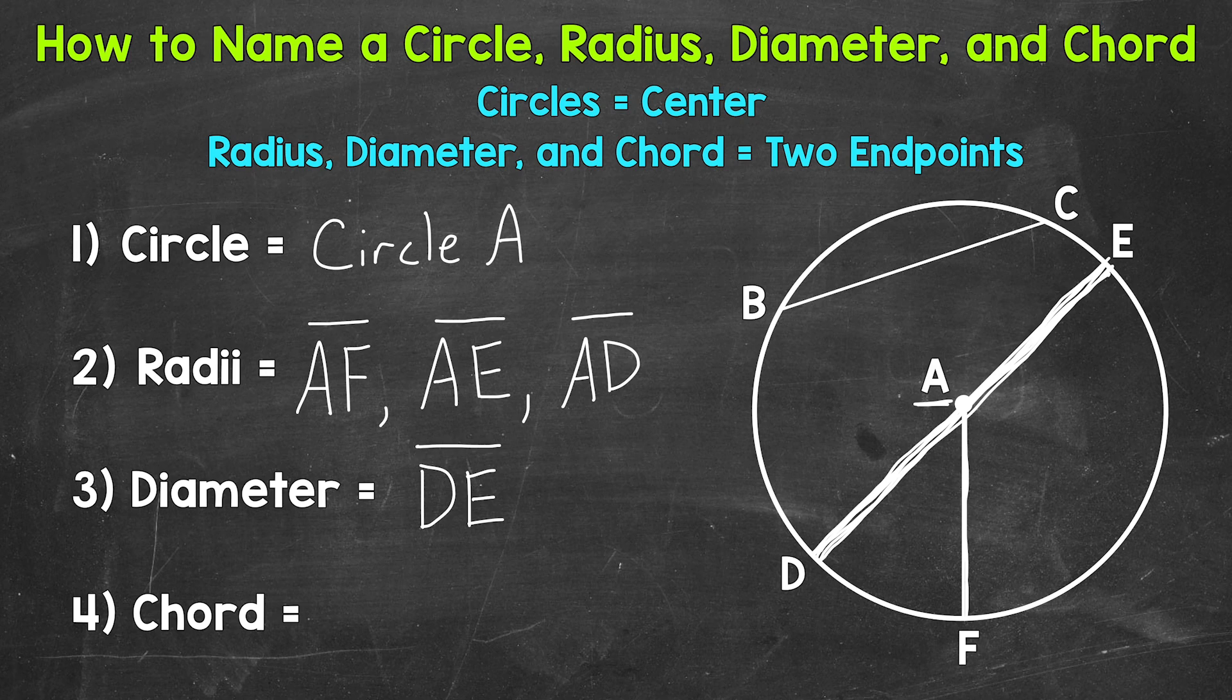Lastly, let's name a chord. A chord is a line segment that connects two points on the circle. A diameter is a very specific chord that has to go through the center, but a regular chord does not, just any two points on the circle. So this is a chord right here.